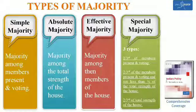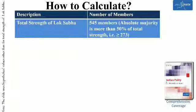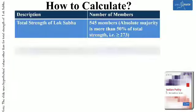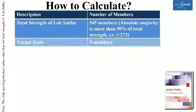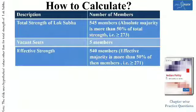Let us first understand absolute, effective and simple majority with the help of an example. The total strength of Lok Sabha is 545 members. Absolute majority is more than 50% of total strength, that is 273 or more members in case of Lok Sabha. Suppose there are five vacant seats in Lok Sabha — vacant due to death, resignation or removal of members. Total strength less vacant seats equals 540 members. This figure of 540 is the effective strength or then-members of Lok Sabha. Effective majority is more than 50% of then-members, that is 271 or more in our example.